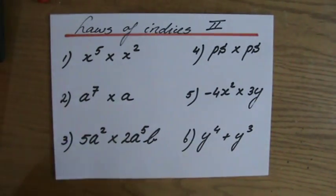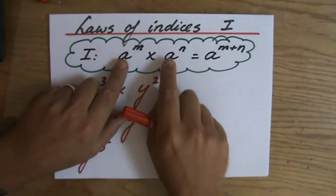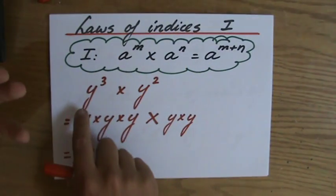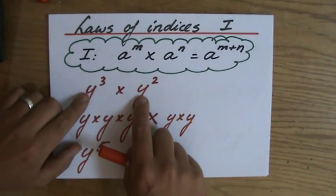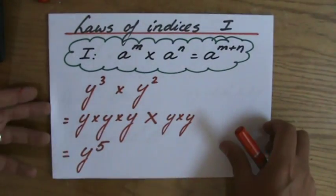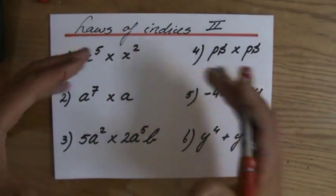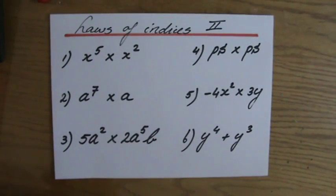Welcome back — laws of the indices. We're doing the first law of the indices. Going back quickly to the previous video, we said that if the bases are the same and you are multiplying, you add the indices. For instance, y to the power 3 times y to the power 2 — the base is the same, the answer is y to the power 5. Make sure you have seen my previous videos explaining this law. There are six example questions — perhaps pause the video now and try them yourself first, then continue for the answers.